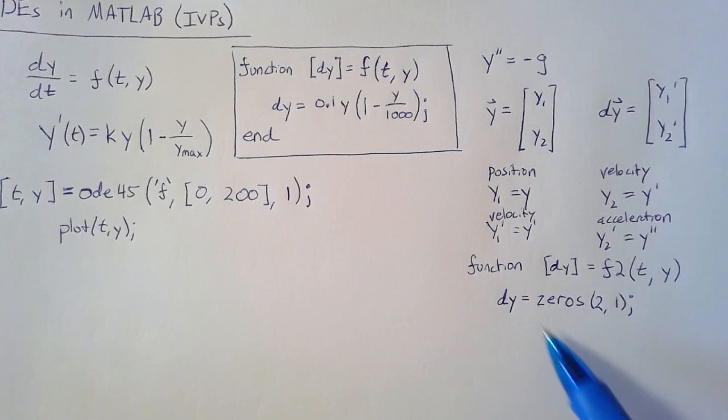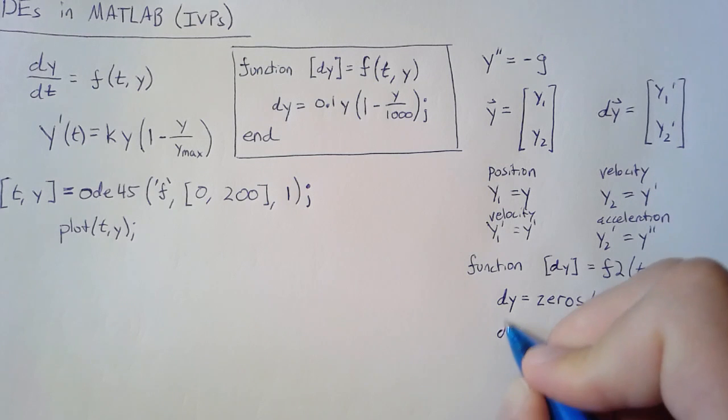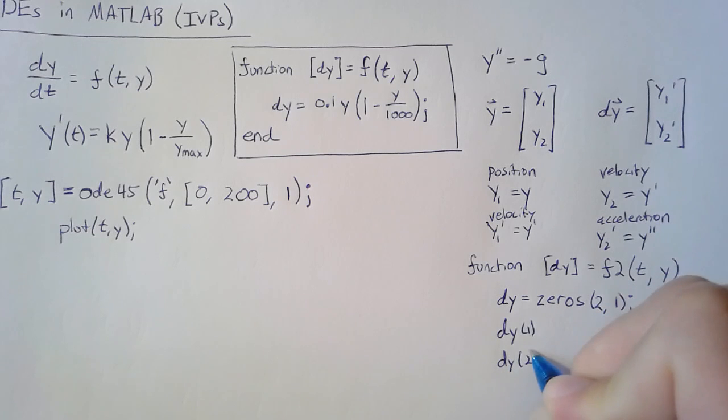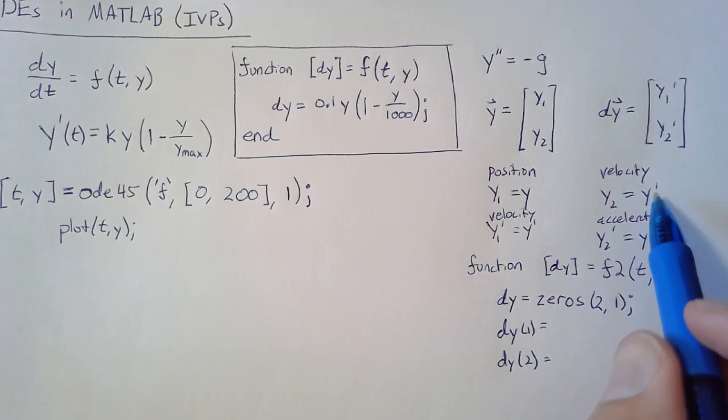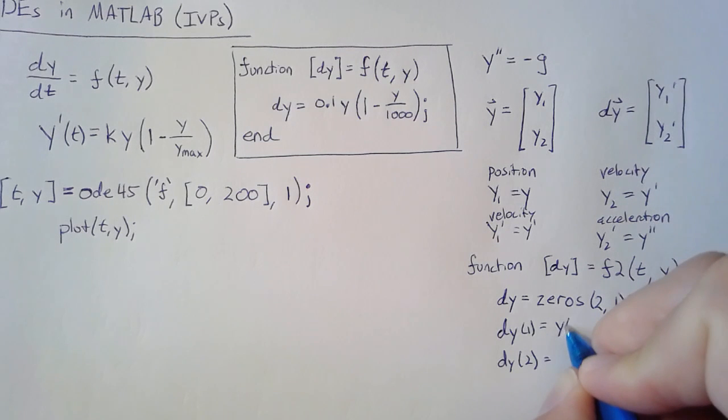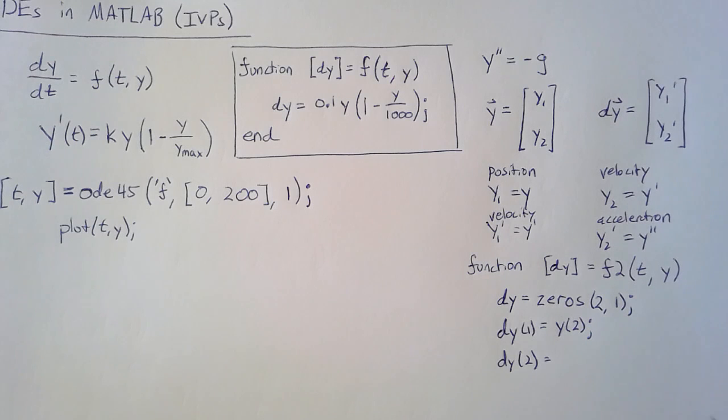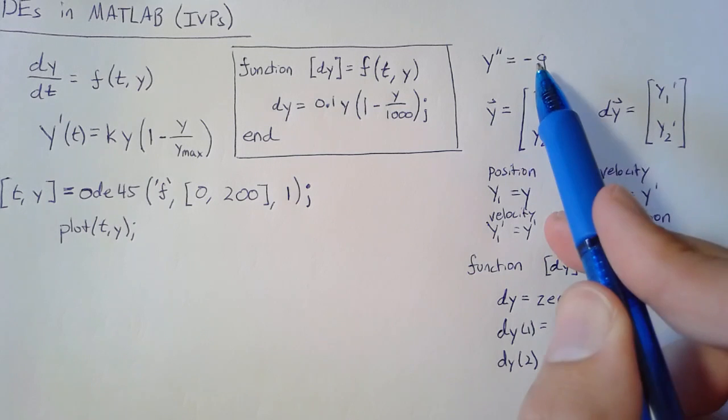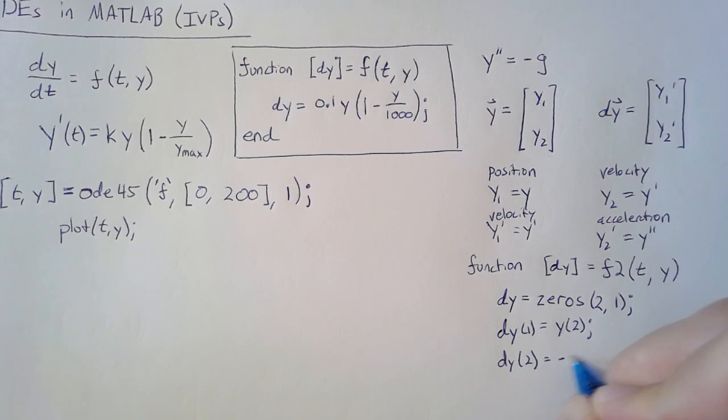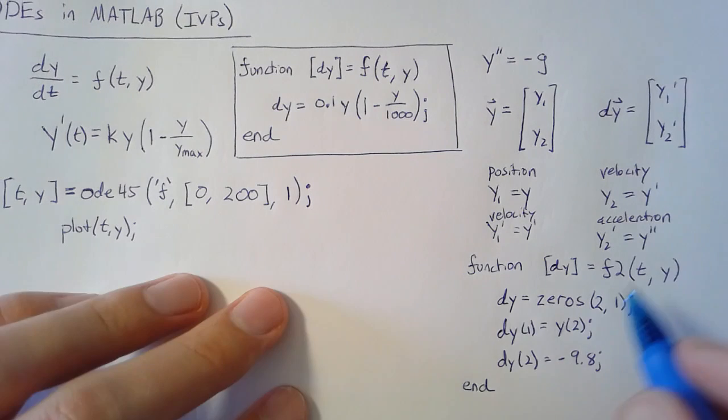Then we can start specifying what each of these needs to be. We need to specify dy(1) and dy(2). dy(1) is the velocity, which is y(2), so dy(1) simply equals y(2). dy(2) is our acceleration, which comes straight from the problem statement, so we plug in negative 9.8. Then we end our function, and we have our function f2 completed.